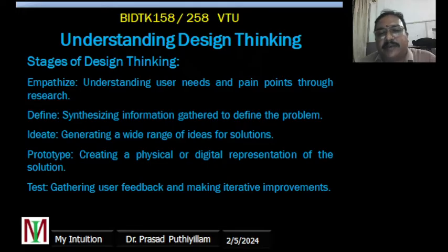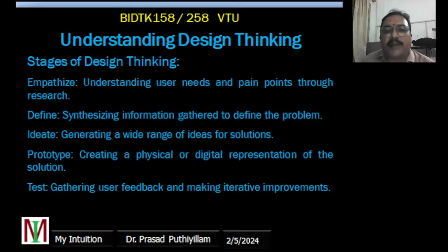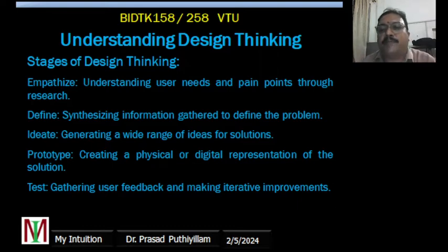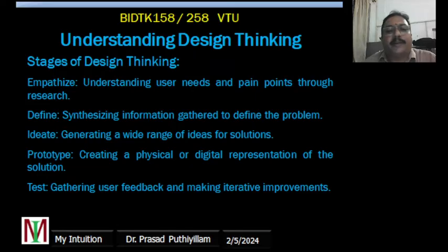Stages of design thinking: design thinking is an approach to solving problems that focuses on understanding user needs, generating ideas, creating prototypes, and refining solutions. It prioritizes empathy, experimentation, and iteration — doing it again and again and making it proper in the design process. The typical process involves five stages: Empathize, Define, Ideate, Prototype, and Test.